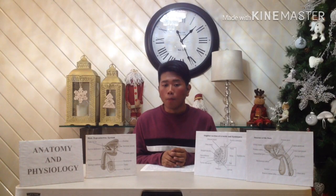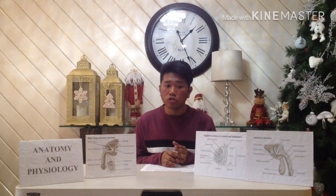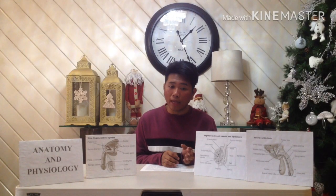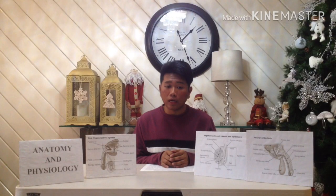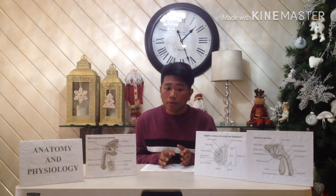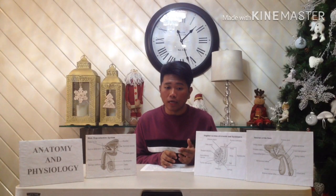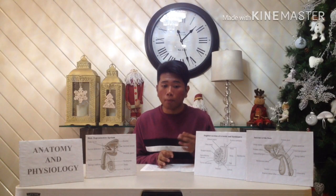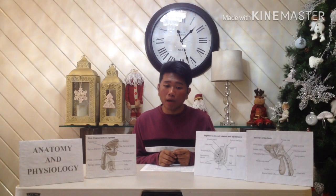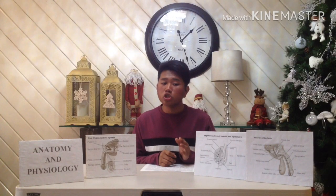Early in embryonic development, primordial germ cells enter the testes and differentiate into spermatogonia, immature cells that remain dormant until puberty. Spermatogonia are diploid cells, each with 46 chromosomes arranged in 23 pairs, located around the periphery of the seminiferous tubules. At puberty, hormones stimulate these cells to begin dividing by mitosis. Some of the daughter cells remain at the periphery as spermatogonia; others are pushed toward the lumen and become primary spermatocytes. Because they are produced by mitosis, primary spermatocytes are diploid and have 46 chromosomes. Each primary spermatocyte goes through the first meiotic division.